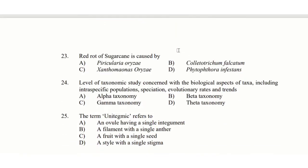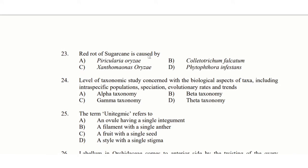23rd question: Red rot of sugarcane is caused by — option A: Pyricularia, option B: Colletotrichum falcatum, option C: Xanthomonas, option D: Phytophthora infestans. The answer is option B: Colletotrichum falcatum.